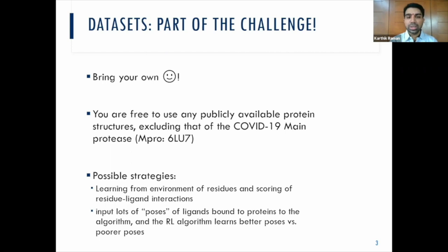There are many possible strategies that one can evolve to cast this as a reinforcement learning problem. You may want to learn from the environment of different residues and score them based on residue-ligand interactions. Or you can feed in a lot of poses of the ligand binding to the protein in different ways, and those poses can be labeled as good and bad based on the binding energy. Give it to the RL agent and it can actually learn the optimal, the best way to dock.